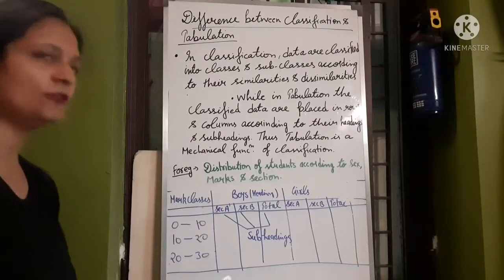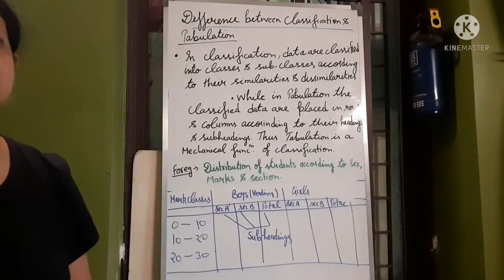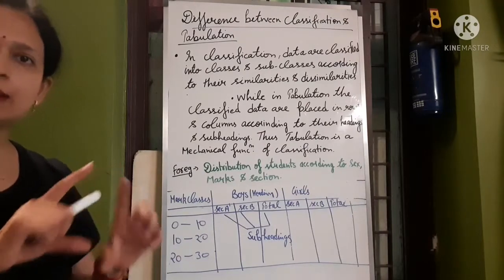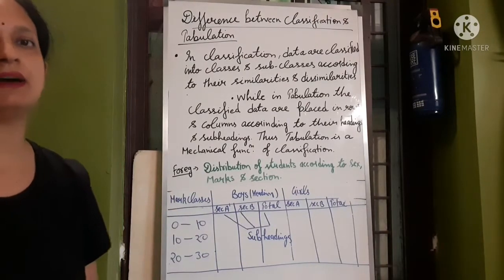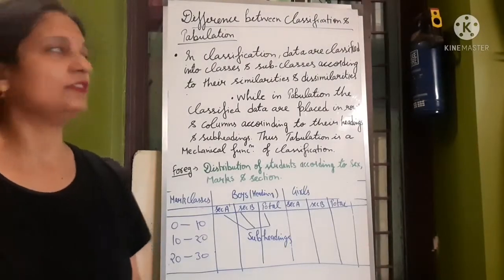Now look, how many boys or girls are there? How many boys are in section A and section B? And how many boys are in the table? This is our tabulation. I hope that you like this video.